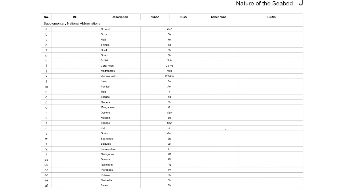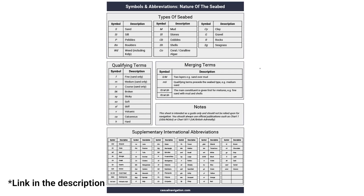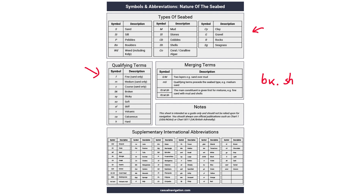It can get confusing once you see so much information — we're on page 51 at the moment. So what I've done is broken all this down and put it into an easy-to-read article on my website where you can download a cheat sheet. It's free to print off. At the top I've listed all the basic international symbols: sand, silk, pebbles, boulders, mud, and all the most common ones. Then you hit the qualifying terms — things that go in front of something else, so you might have 'bk.sh' meaning broken shells. Next to that you can see how they merge together, and I've also added in all the NOAA ones because a lot of you are based in the US and will find those useful too.